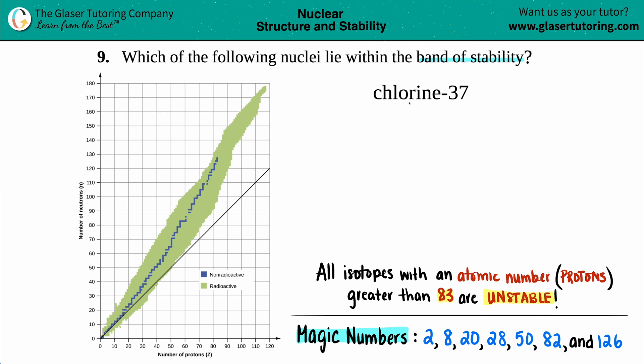The first thing we have to figure out is let's write it out in that notation. We got chlorine. If they write it like this with a number after the name, that's always going to be your atomic mass, and the atomic mass always goes on the top, so we got 37 on the top.